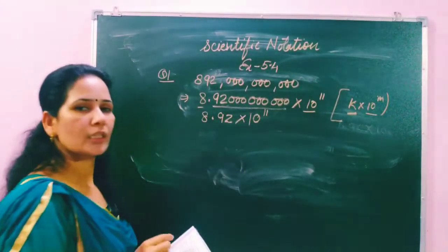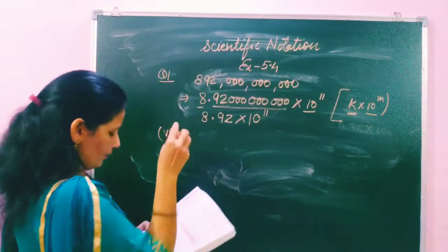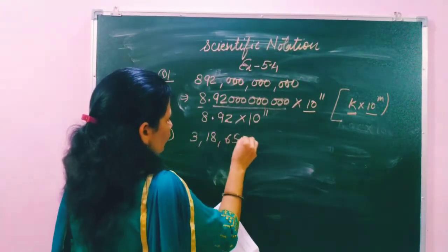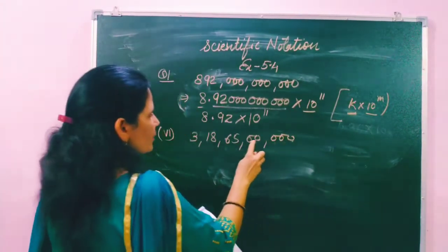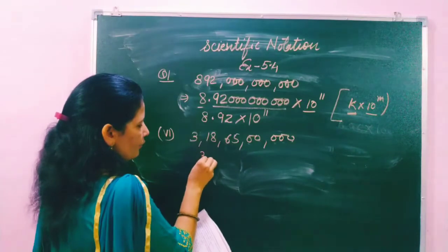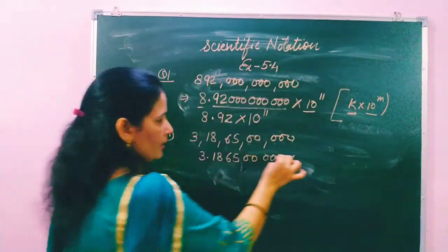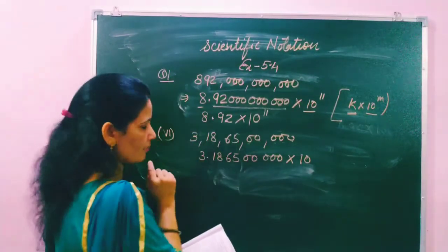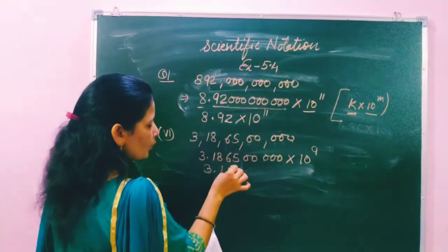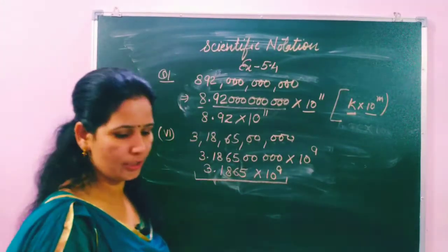Let's take the sixth part. They have given a large number: placing it on the number chart — one, ten, hundred, thousand, ten thousand, lakh, ten lakh, crore, ten crore, arab — we put the decimal after the first digit 3, write the remaining digits as they are, and count the digits after: 1 through 9. So we can write 3.1865 × 10^9. This is the number written in scientific notation, also called standard form.